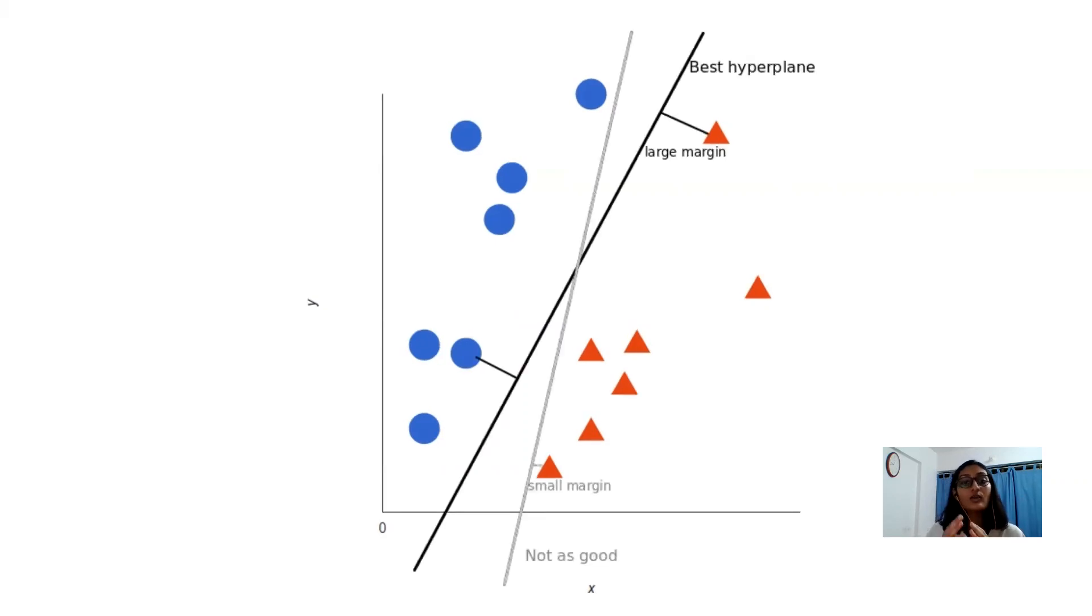As you can see we have two lines over here and thereafter we select the best hyperplane as per the terminologies that we decided based on the maximum margin that we get. Now this line is the decision boundary. Anything that falls on one side of it we will classify as blue and the other side is red.